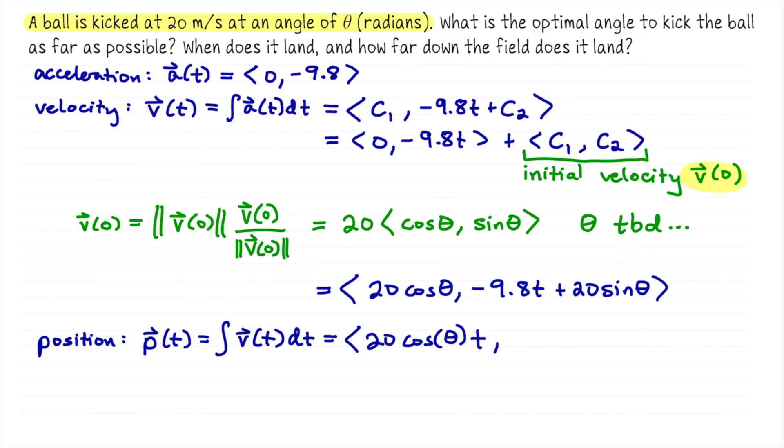Because while we don't know what theta is, it is just going to be a given number, so 20 cosine of theta is a constant, so I've anti-differentiated that constant with respect to t. And then for the second term it's going to be negative 4.9t squared plus 20 sine of theta times t.